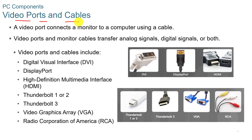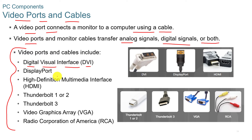A video port connects a monitor to a computer using a cable, and video ports and monitor cables transfer analog signals, digital signals, or both. Video port and cable types you need to know for this course and the CompTIA A+ exam include DVI, DisplayPort, HDMI, Thunderbolt 1 or 2, Thunderbolt 3, VGA, and RCA. RCA is mostly audio — video through the yellow connector, audio through red and white.